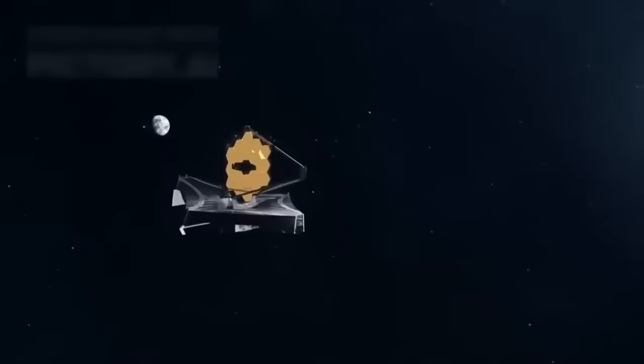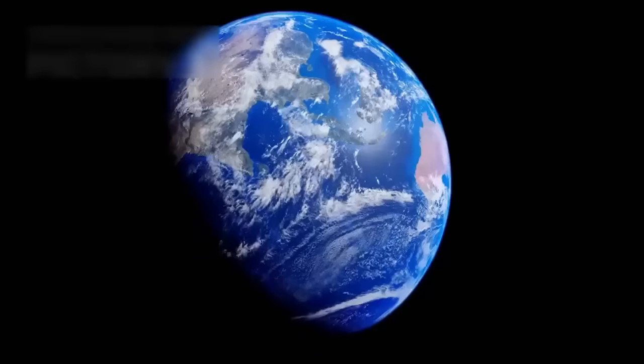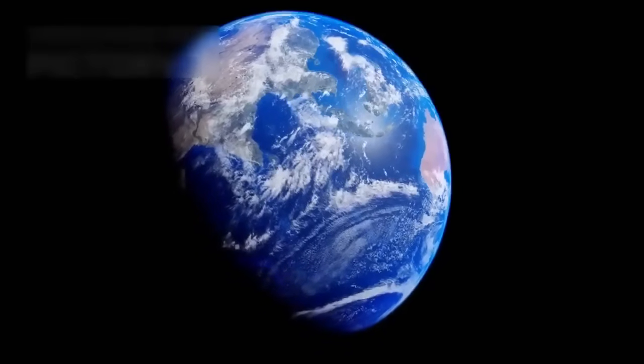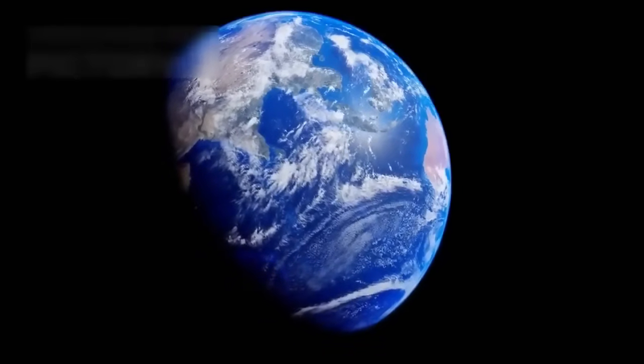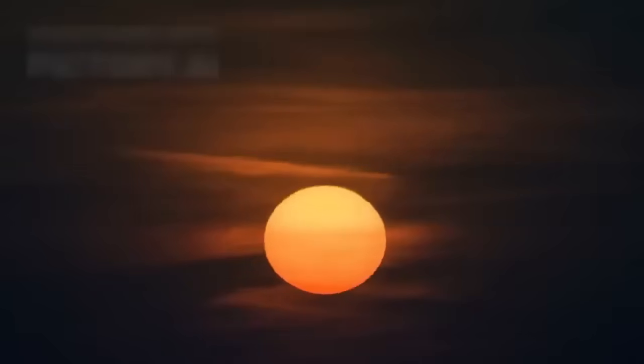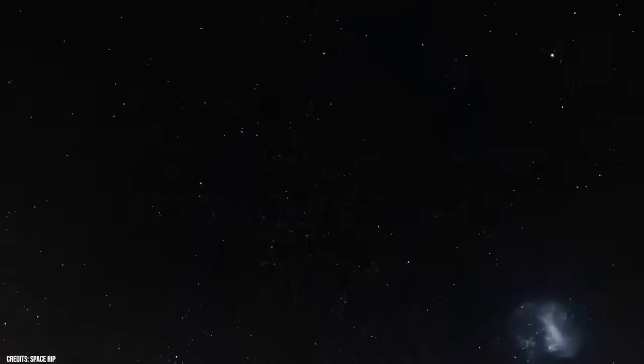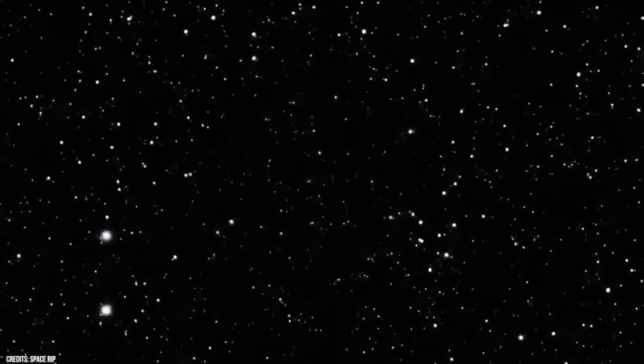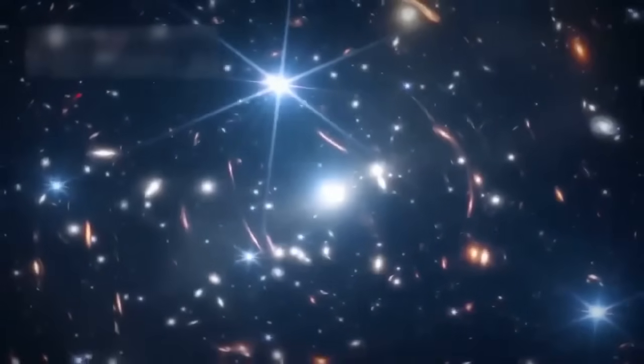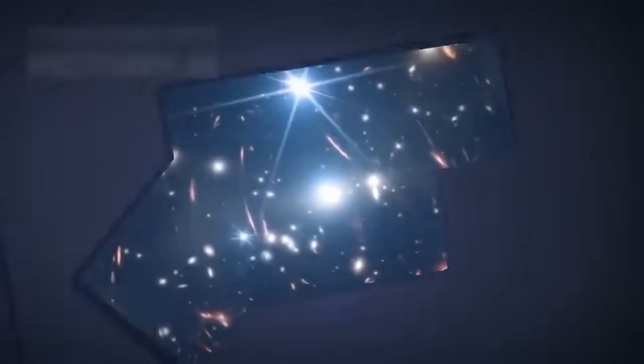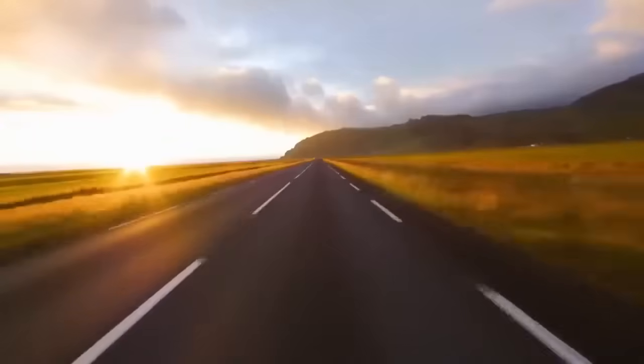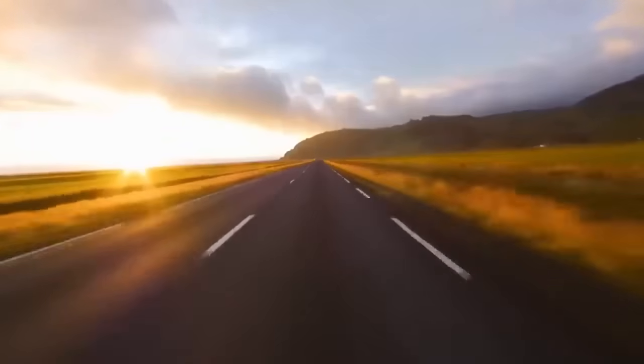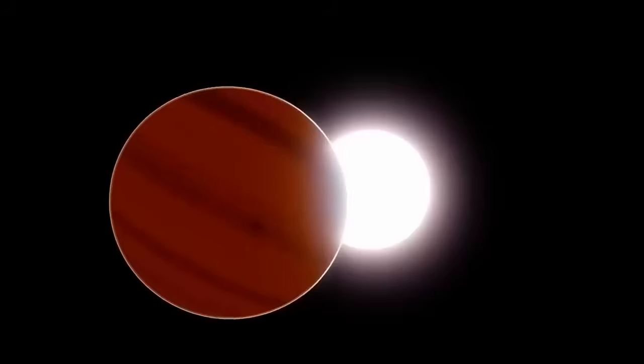The vastness of the universe is truly mind-boggling. The sun, that bright, fiery orb that lights up our days and warms our planet, is actually quite far away from us, sitting at a distance of about 149.6 million kilometers, or 92.9 million miles. To make such a vast expanse easier to understand, scientists created a unit of measurement called an astronomical unit, AU. 1 AU is roughly equal to 149,598,000 kilometers, or 92,955,887 miles.